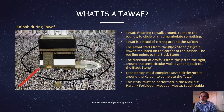This completes one circle. Each person must complete seven circles or orbits around the Kaaba to complete a Tawaf. This ritual must be performed in the Masjid-e-Haram, Forbidden Mosque, Mecca, Saudi Arabia. This is a very basic intro of the Kaaba, Salah, and Tawaf. Now, we will discuss what is the purpose of all this — why Allah made the Kaaba and its rituals.